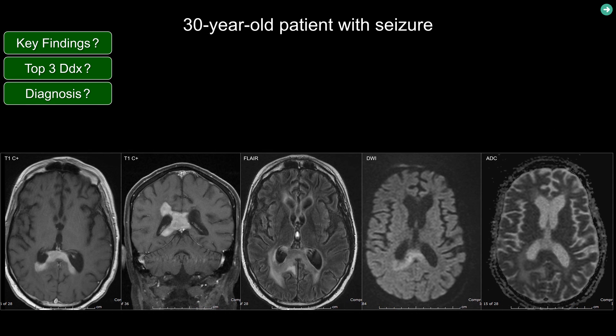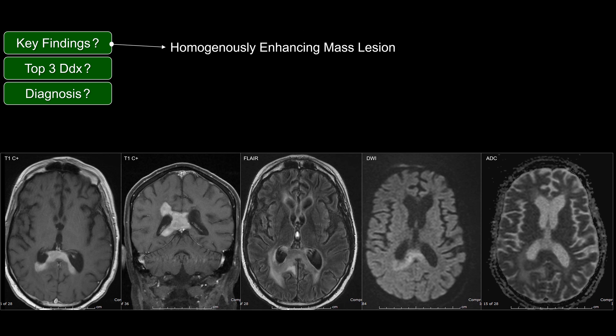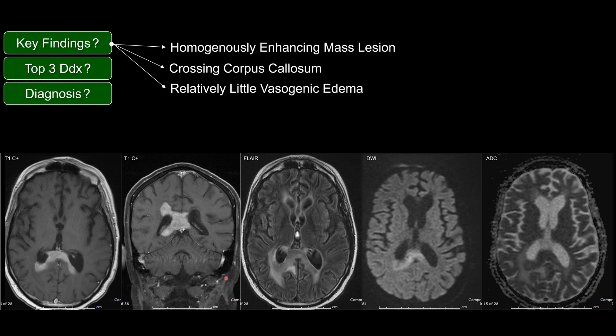Hi everyone, let's talk about a lesion that crosses the corpus callosum. Here you have a 30-year-old patient presenting with seizure. The key finding here is a homogeneous lesion that crosses the splenium of the corpus callosum. On FLAIR, there is relatively little surrounding edema, and there is restricted diffusion associated with this particular lesion.